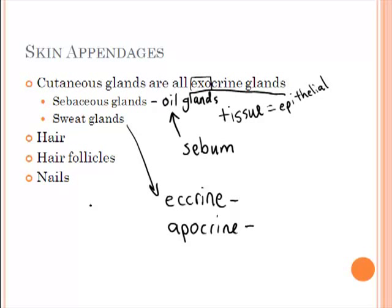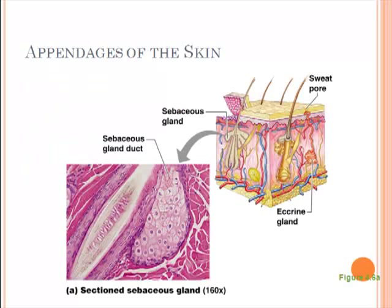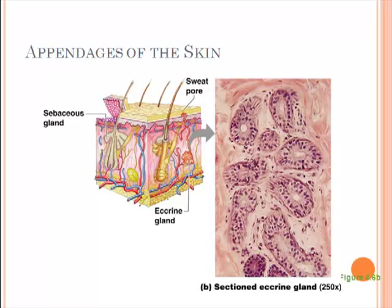The other types of skin appendages are hair, hair follicles, and nails. Looking at a microscope slide of the oil glands, you can see how they are made of epithelial tissue as opposed to connective tissue. Sebaceous glands are associated with hair follicles. Sweat glands are not, except apocrine glands which are associated with hair follicles. Eccrine glands are found throughout the skin. Here you can see an eccrine gland and sweat pore — again, made of epithelial tissue.